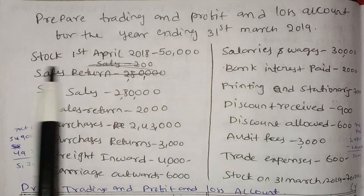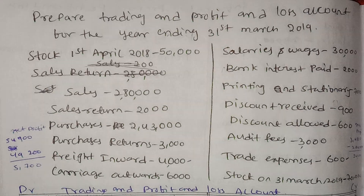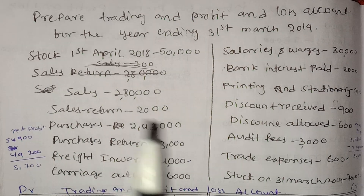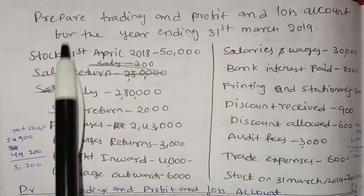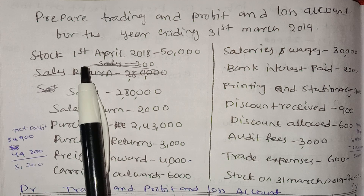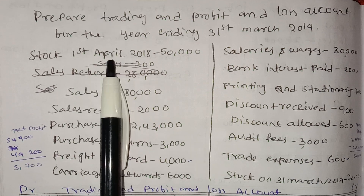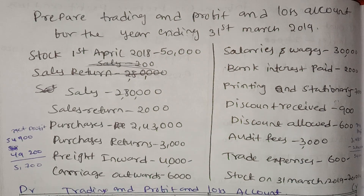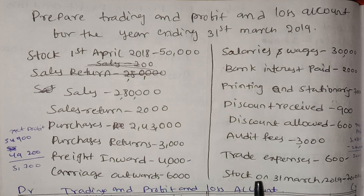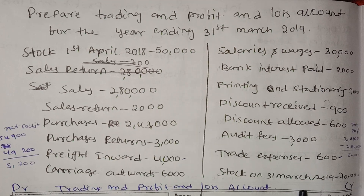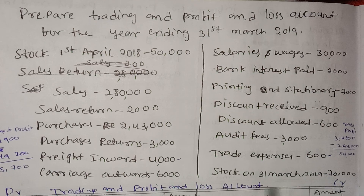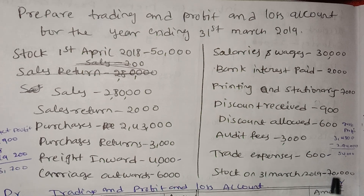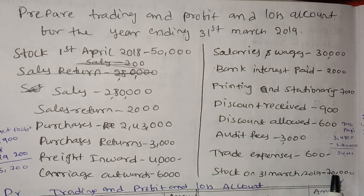Stock on 1st April 2018 — this is the opening stock. Stock on 31st March — this is the closing stock, which is $70,000.